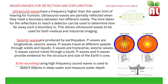Seismic waves are produced by earthquakes. P waves are longitudinal seismic waves; P waves travel at different speeds through solids and liquids. S waves are transverse seismic waves; S waves cannot travel through a liquid. P waves and S waves provide evidence for the structure and size of the Earth's core, as the Earth's inner core is a solid and the outer core is a liquid. Echo sounding uses high frequency sound waves to detect objects in deep water and measure water depth. Using the speed-distance-time calculation, you send an echo, time how long it takes to return, divide that time by two, and knowing the speed of sound you can calculate the distance.